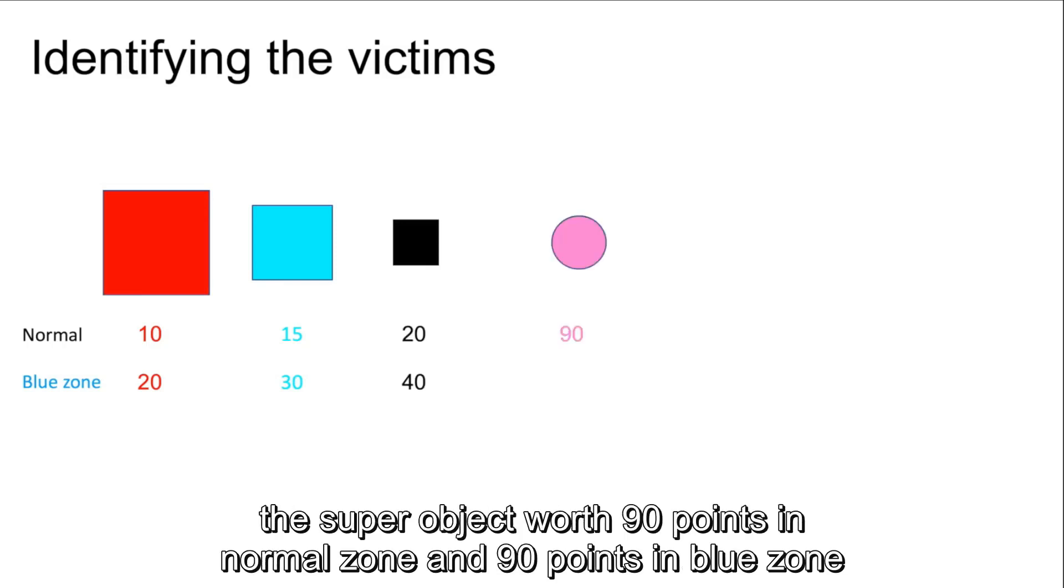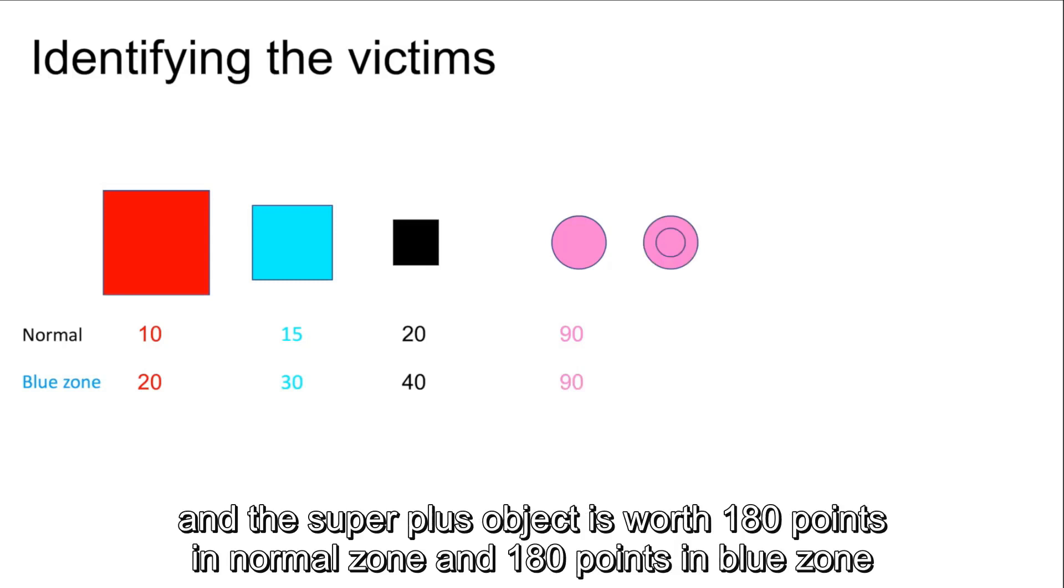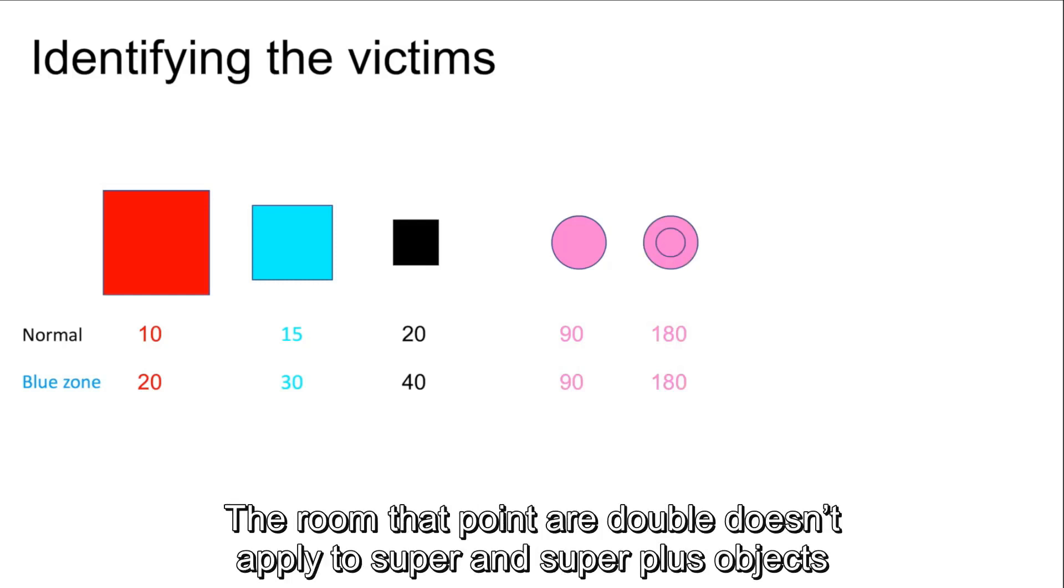The super object is worth 90 points in the normal zone and 90 points in the blue zone, and the super plus object is worth 180 points in the normal zone and 180 points in the blue zone. The rule that the points double doesn't apply to the super and super plus objects.